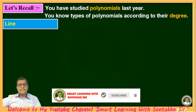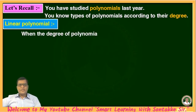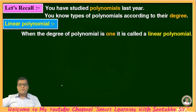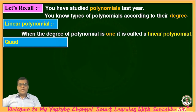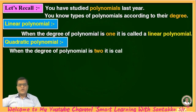Then, what is the Linear Polynomial? When the degree of the polynomial is 1, it is called the Linear Polynomial. And you know the Quadratic Polynomial — when the degree of the polynomial is 2, it is called the Quadratic Polynomial.